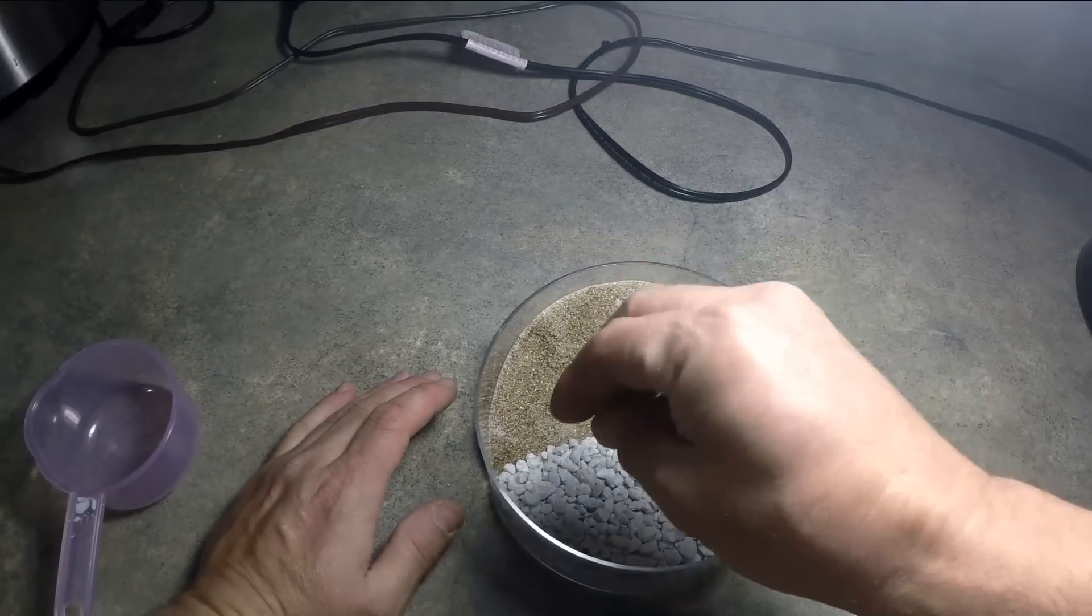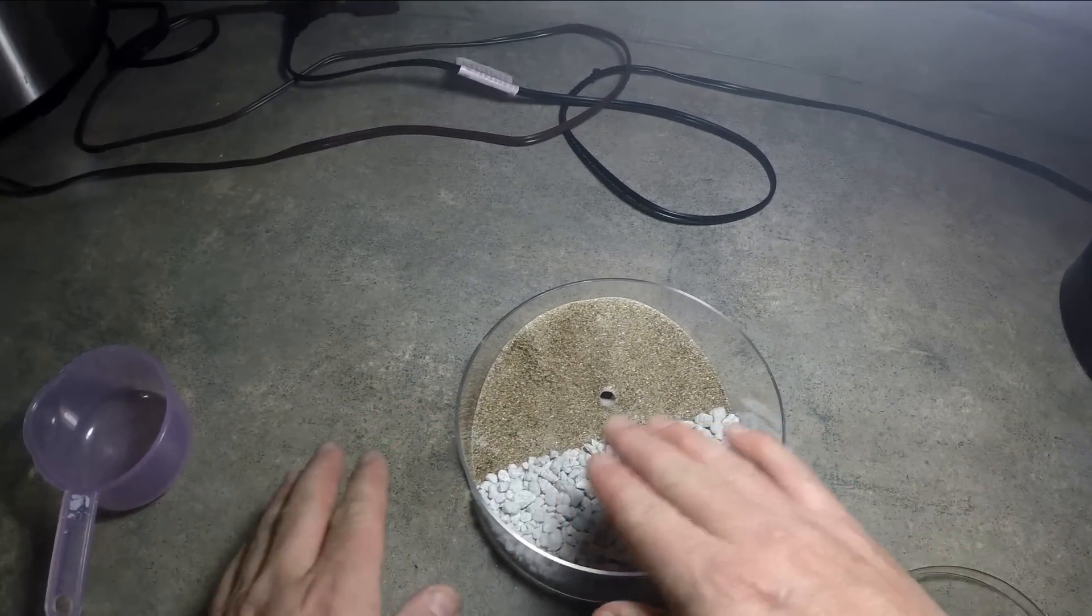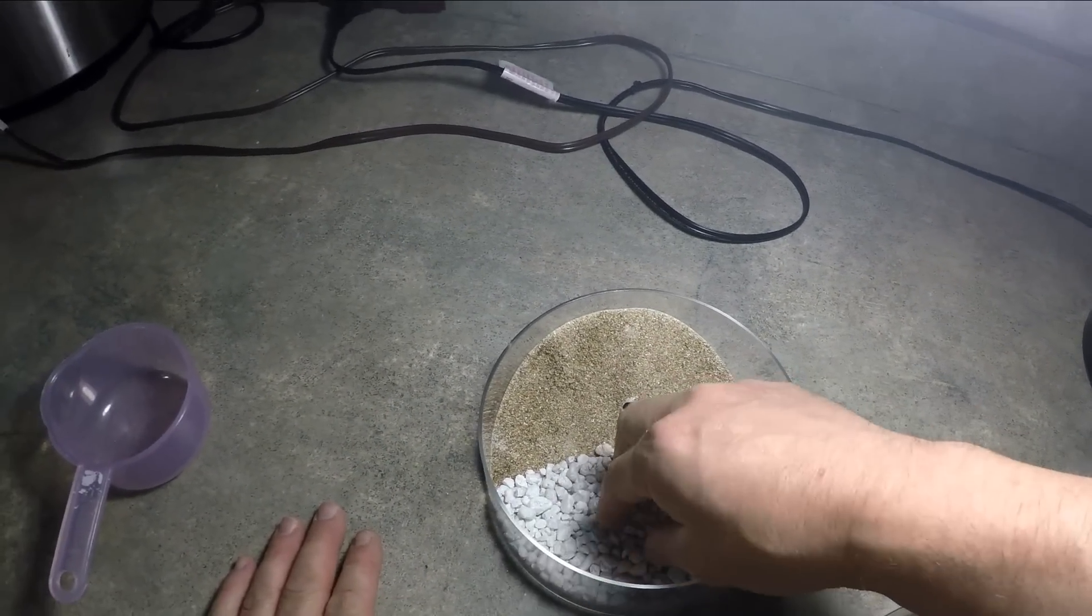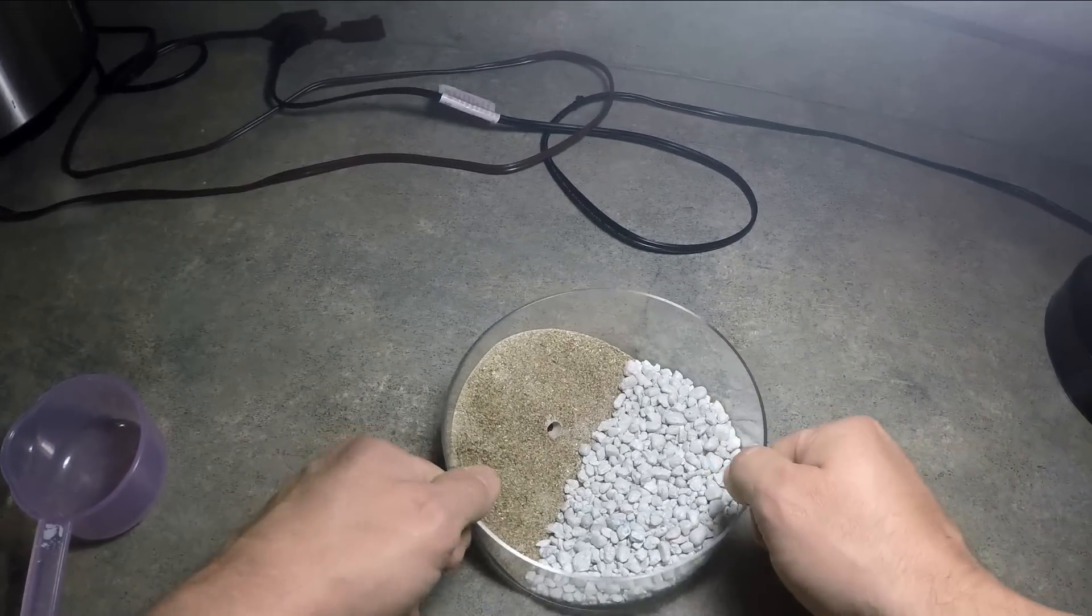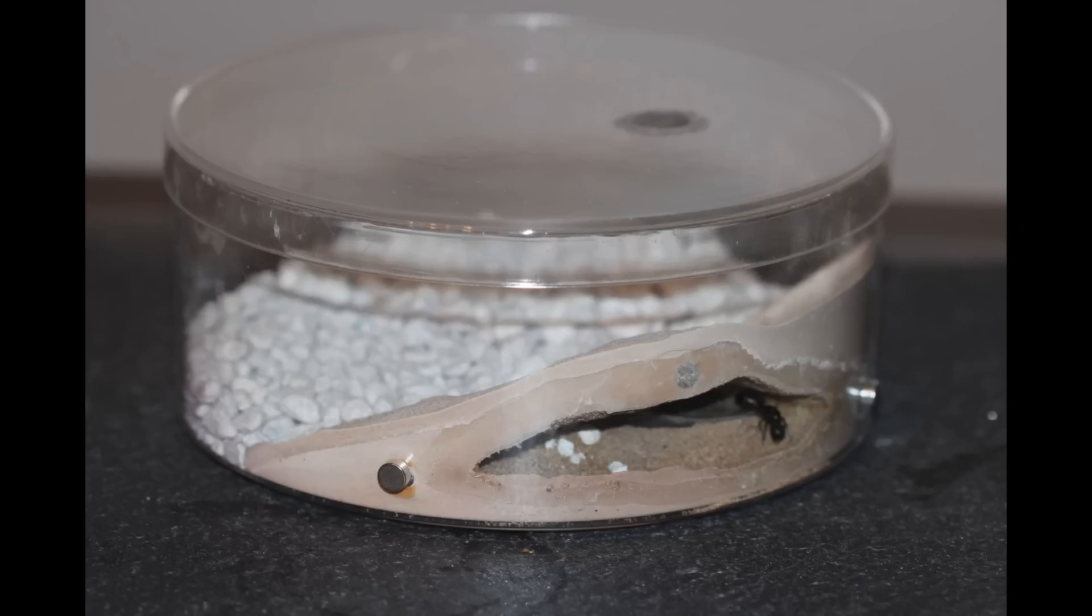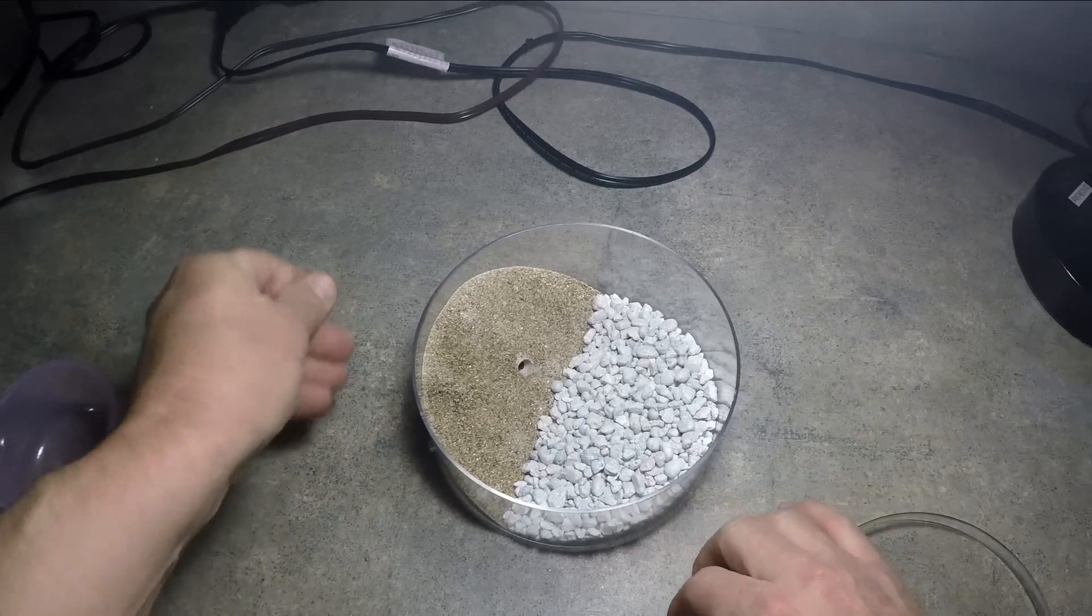And then you can add some sand in here to fill in some of the holes in the rocks. They're pretty heavy rocks. Not a lot of ants are going to be able to move them. My carpenter ant queen did and was able to move them.